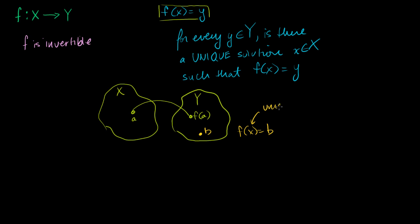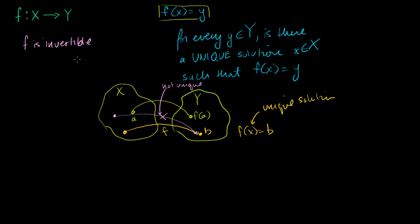Is there a unique solution? First you have to think: is there a solution? Is there some x here that, if I apply the transformation f to it, I get there? And I also want to know, is it unique? If this is the only one, then it's unique, but it's not unique if there's some other element in X that if I apply the transformation, I also go to b — that would make it non-unique. So what I want to concern ourselves with in this video is: is invertibility related to the idea of a unique solution to this for any y in our codomain?